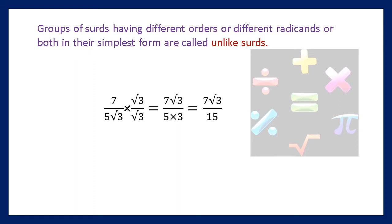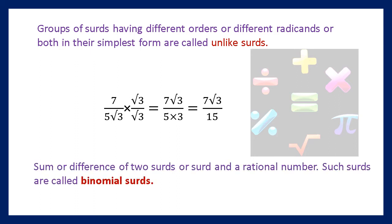The sum or difference of two surds, or a surd and a rational number, are called binomial surds.